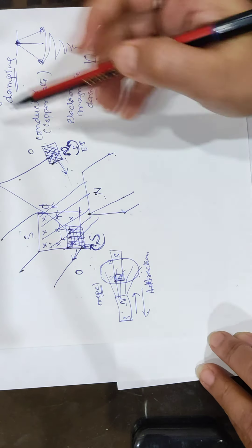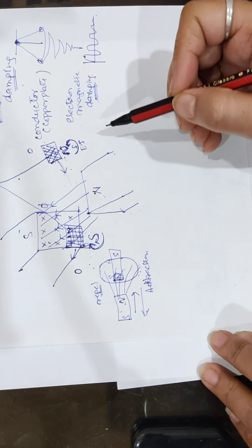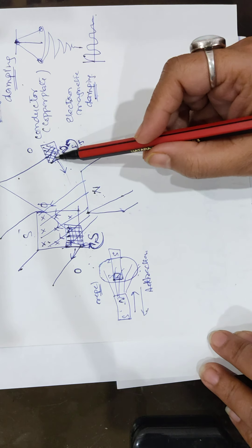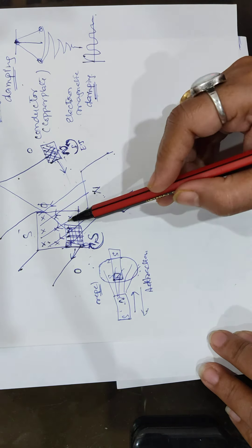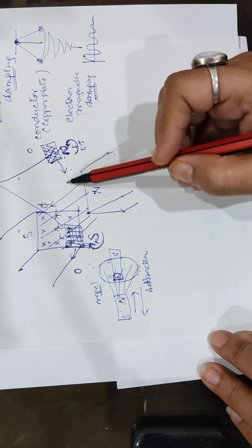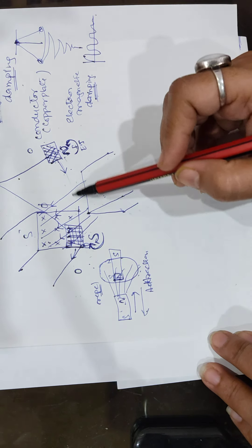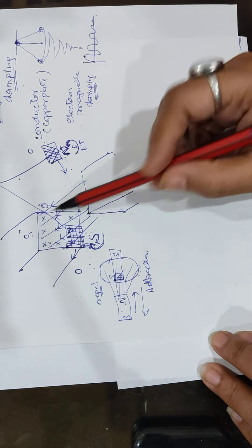This is all done by eddy currents. So what is the definition of eddy currents? They always oppose the flux. When flux is increasing from 0, the eddy current opposes it. As the conductor moves, there is a change in eddy current as well, and it always opposes the flux.